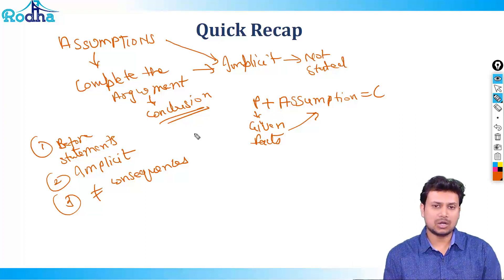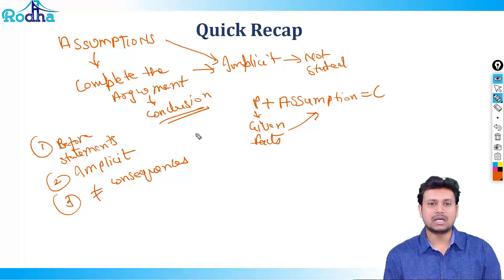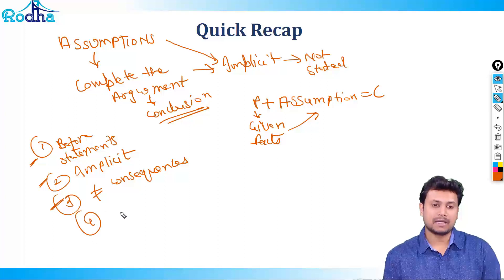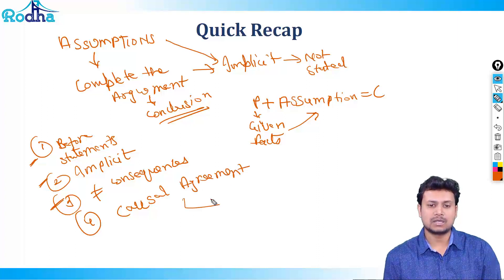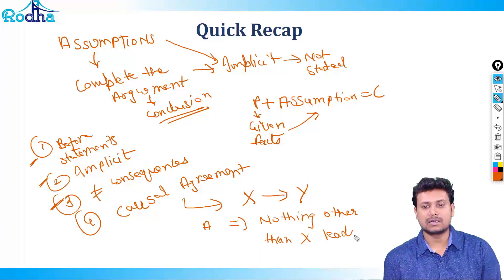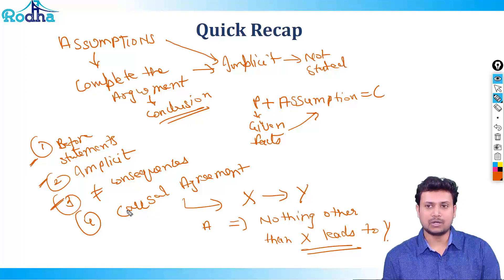If you are not clear on what we are doing here, please go back to the concept video. But just to call out before we start the questions: assumptions are before statements — something thought before the main statement; they are implicit; they are not consequences; and number four, they always have a causal agreement. If X leads to Y, what you're assuming is that nothing other than X leads to Y — this is an important property we will continuously use.